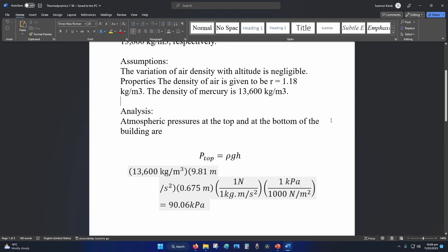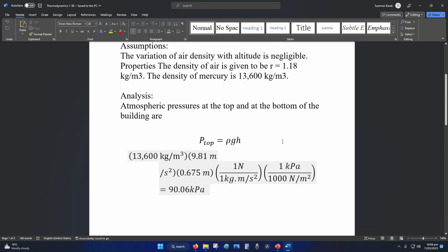First of all we got to find the top pressure. Rho GH, density of mercury is given to us. Gravity we assume. Height is given 0.675 meters which gives us 90.06 kPa.